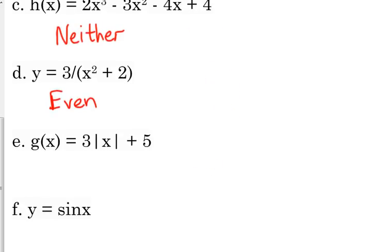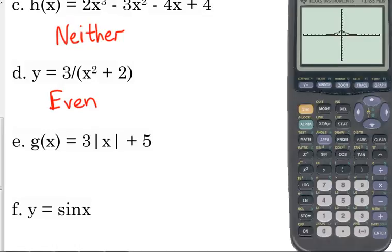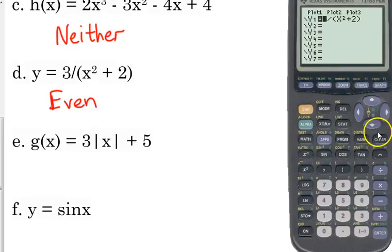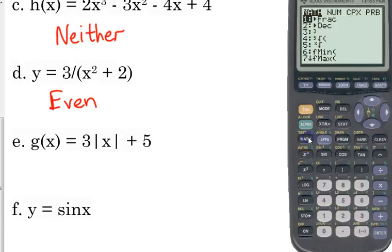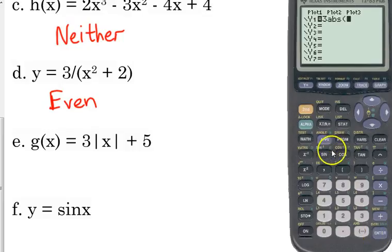Let's look at this absolute value function. Here's a good time to remind you where the absolute value button is. You don't just put parentheses around that x, you have to put the absolute value. The absolute value bars are under math. Go over to num, that stands for number. The very first option says abs, that stands for absolute value. Put the x in there, close the parentheses, and then plus 5.